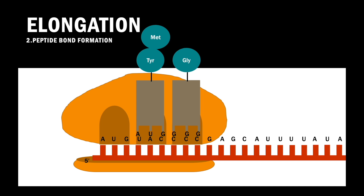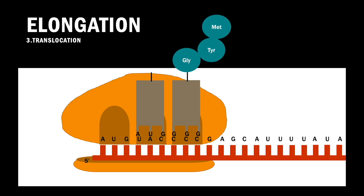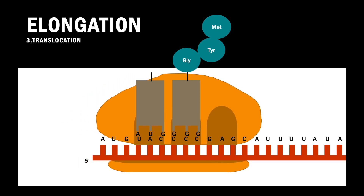Again, peptide bond formation follows, where a peptide bond is formed between the polypeptide chain attached to the tRNA in the P site and the amino acid attached to the tRNA in the A site. The polypeptide chain is then transferred to the tRNA in the A site. Translocation then follows, where the ribosome moves one codon forward, translocating the tRNA from P site to E site and A site to P site. The empty tRNA in the E site exits the complex.